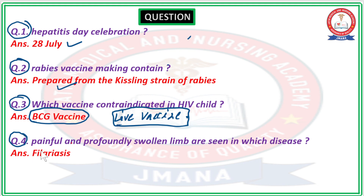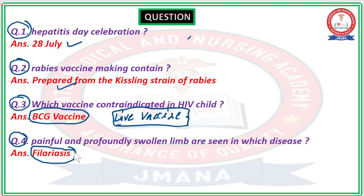Question number 4: Painful and profoundly swollen limbs are seen in which disease? Painful and swollen limbs are a feature of filariasis. In filariasis, swollen and painful limbs are observed.